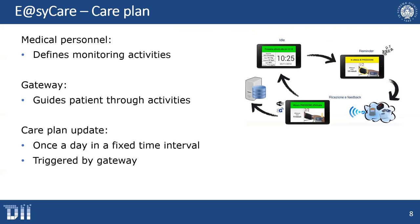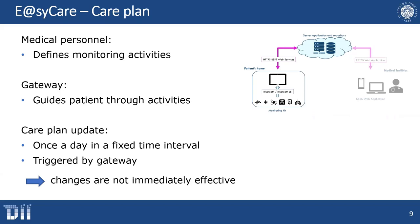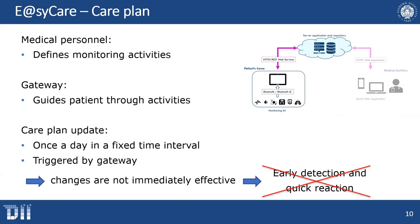Since EasyCare was born for chronic patient monitoring, the care plan is requested from the server once a day or when opening the application. This means that changes done to the care plan itself are not immediately effective, which is in contrast with early detection and quick reaction to clinical status deterioration — fundamental for COVID-19 treatment. To overcome this problem it is necessary to introduce a self-initiated communication system, that is push notifications.